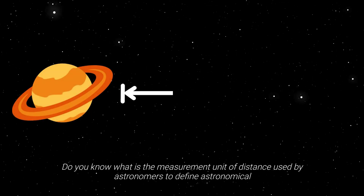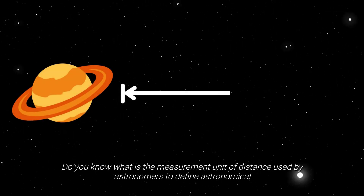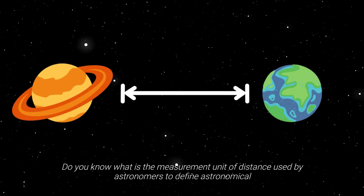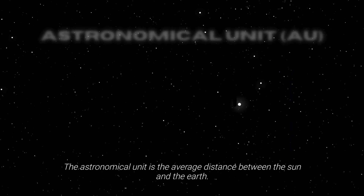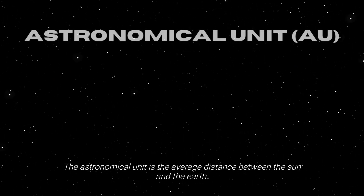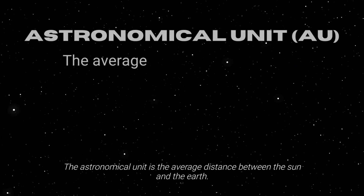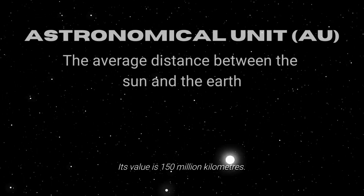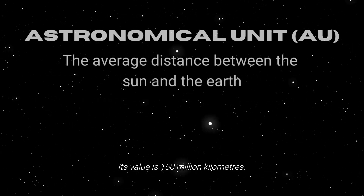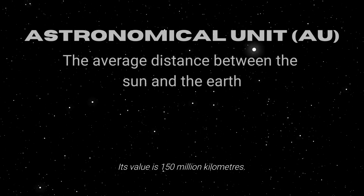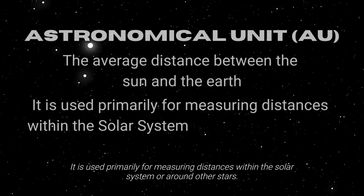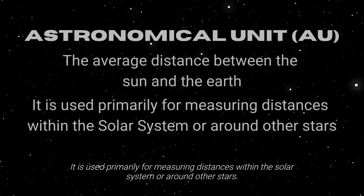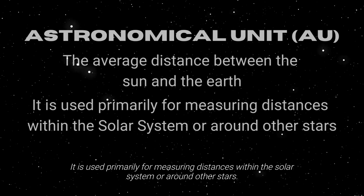Before moving to the next topic, do you know what measurement unit astronomers use to define astronomical distances? The astronomical unit is the average distance between the Sun and the Earth, with a value of 150 million kilometers. It is used primarily for measuring distances within the solar system or around other stars.